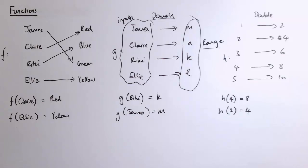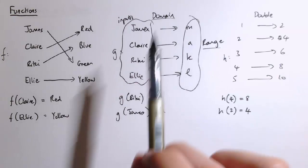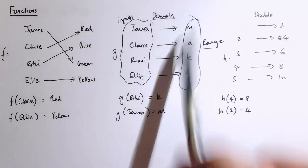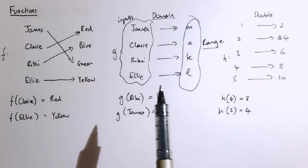In the first video where we introduced functions, we thought about the domain and the range. We said the domain is the name for the set of all the possible inputs and the range for all the possible outputs.